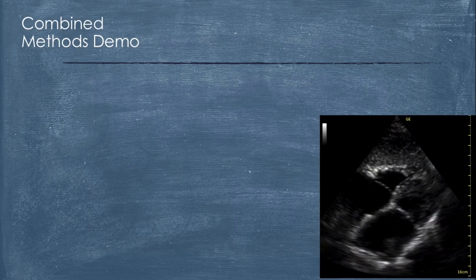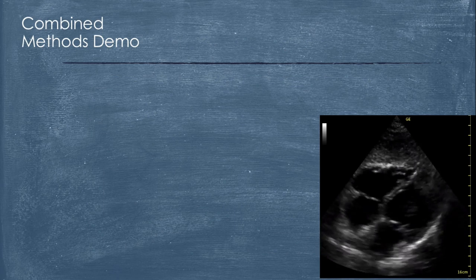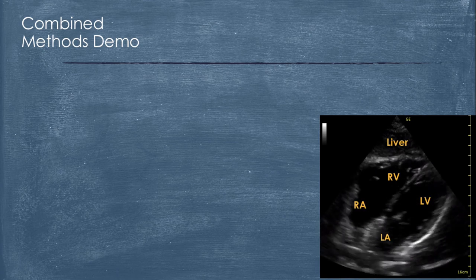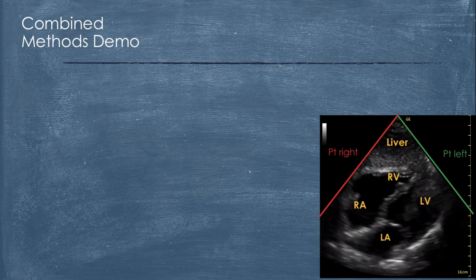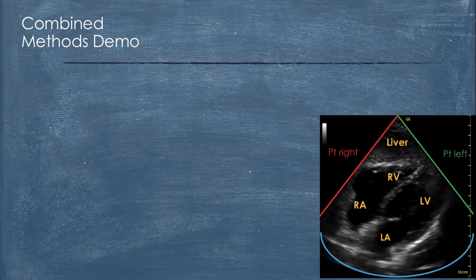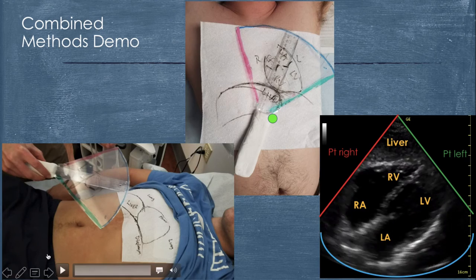And then also here's an example of the sub-xiphoid. So you use a live version of an echo image here. You label it. Keep your orientation in terms of patient left, patient right, screen orientation, probe markers, that sort of thing. And just overlay it. And I find this to be very helpful.